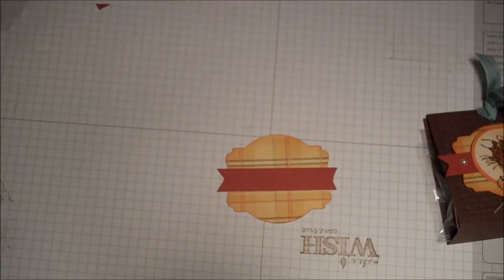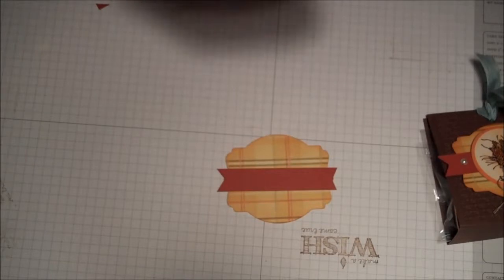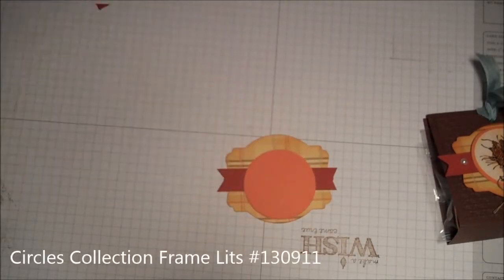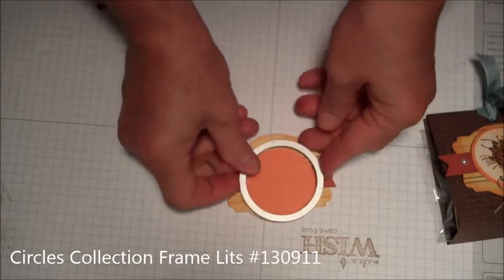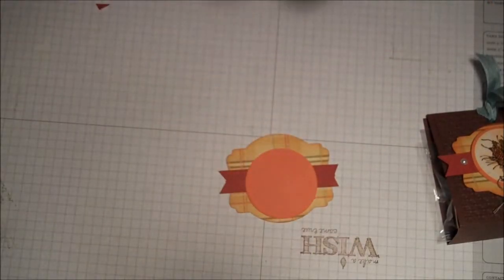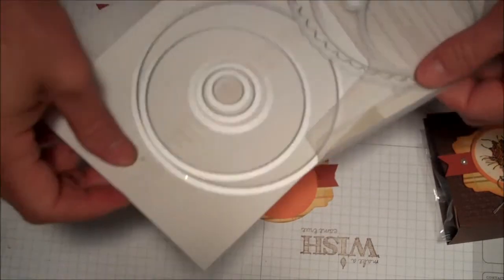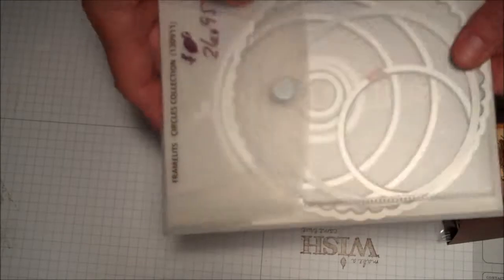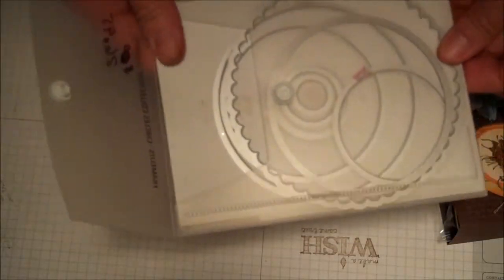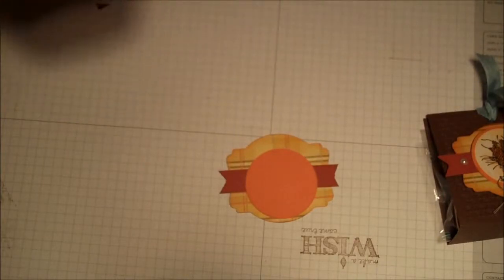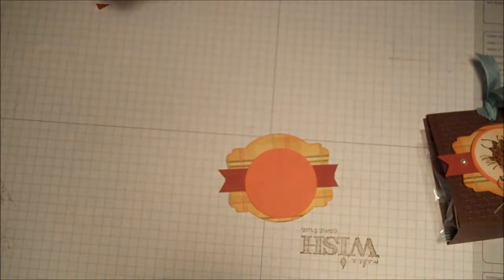This circle is out of Pumpkin Pie and this was a framelit out of the circle framelits. I used it on a card earlier, but here's the set of circle framelits. It is the fourth circle in, and I just cut it out on the Big Shot using my magnetic platform.